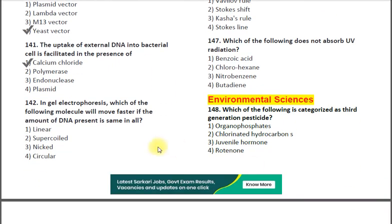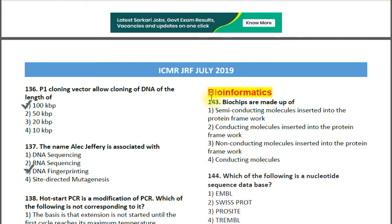Question number 142: In gel electrophoresis, which of the following DNA molecules will move faster if the amount of DNA present is the same in all? Options: 1. linear; 2. supercoiled; 3. nicked; 4. circular. The correct answer is option 2 — supercoiled. Supercoiled DNA is compact in conformation, so it moves faster compared to the others.